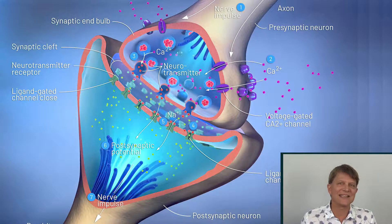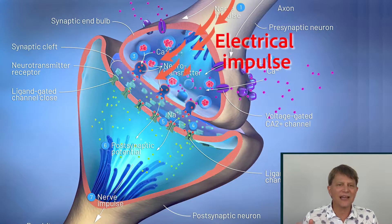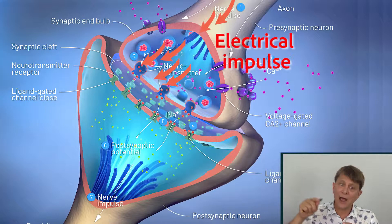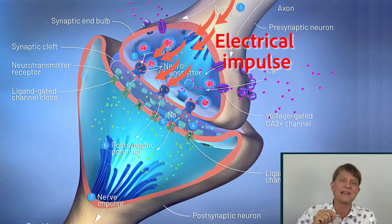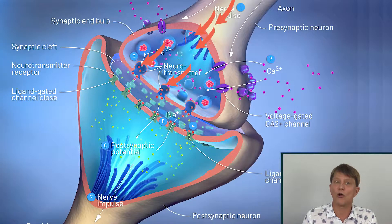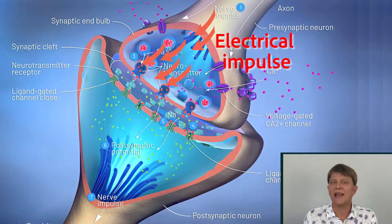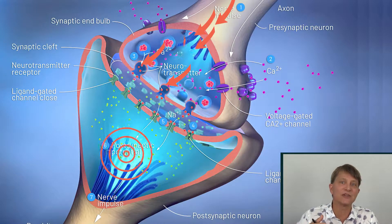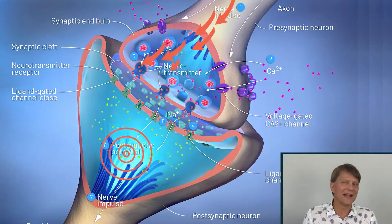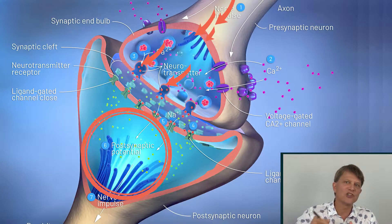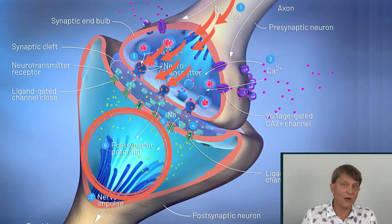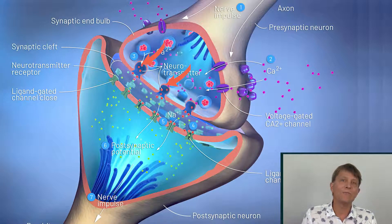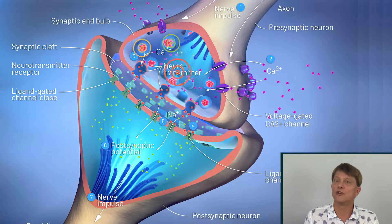Very simplistically, when a nerve gets excited or depolarizes, there's an electrical impulse that travels down the neuron to the far end of the neuron, called the end terminal. At that point, we need to transmit that signal to the next neuron. But in most neurons, the electrical impulse is not able to just go directly into the next neuron, so we use a chemical messenger called neurotransmitters.